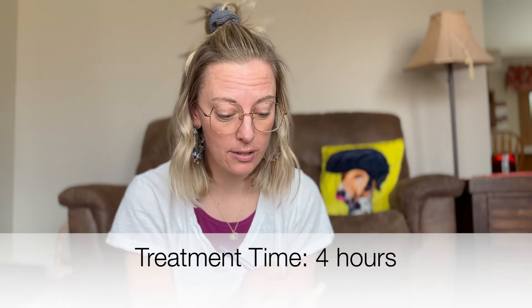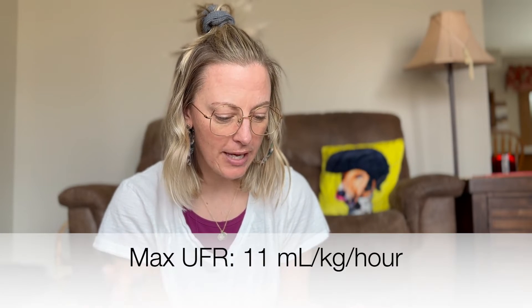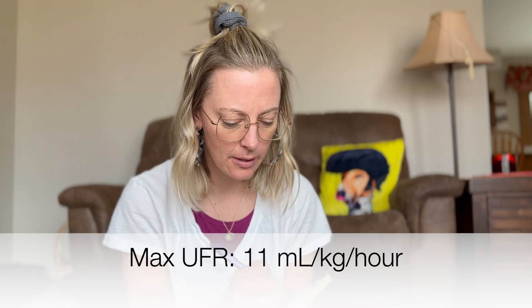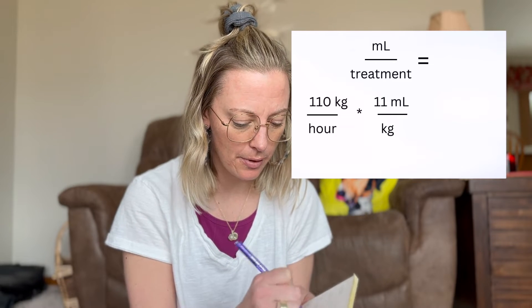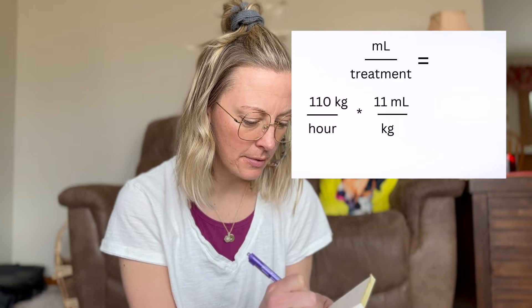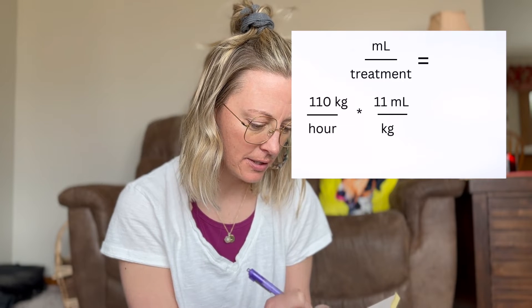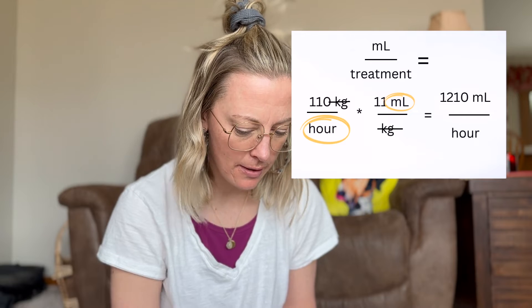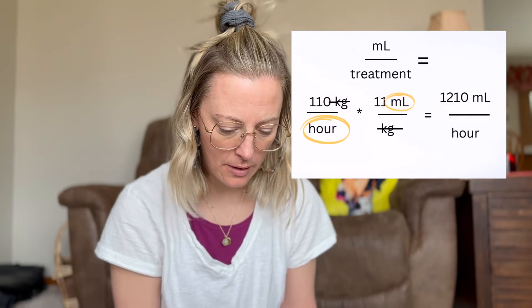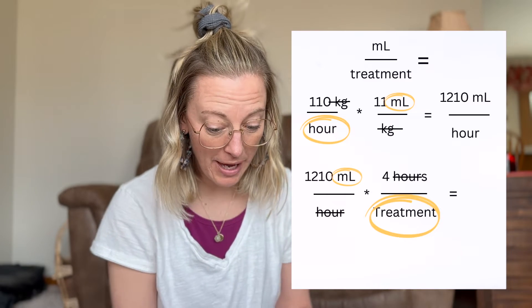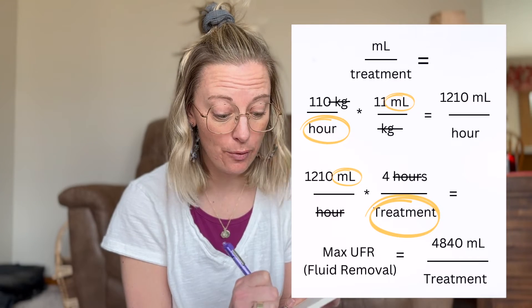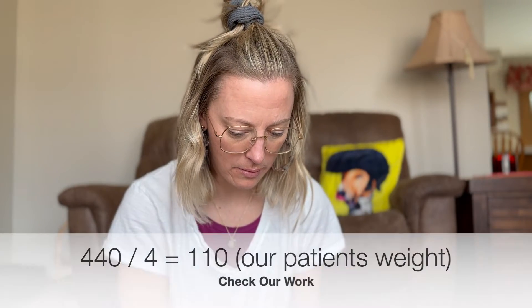Let's say somebody comes in at 110 kilograms and they're on the machine for four hours. So we have a four-hour treatment and their maximum fluid removal rate is 11 mils per kilogram per hour. We're looking for mils per treatment. I've got 110 kilograms times 11 mils, giving mils per hour. So 110 times 11 equals 1,210 mils per hour. Now they're on treatment for four hours, so we multiply that by four. The maximum amount of fluid we can remove is 4,840 mils per treatment. We can check our work by dividing by 11 then by four, and we get 110 kilos.